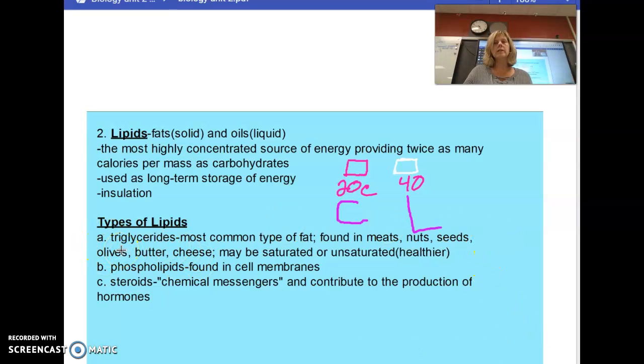Types of lipids: for a long time lipids did get a bad rap and we're kind of changing that. We're realizing some fats are healthier like olive oil and olives. There's different kinds of lipids. Triglycerides are the most common kind of fat found in meats, nuts and seeds, olives, butter, cheese. They may be saturated or unsaturated. Unsaturated tend to be healthier than saturated.